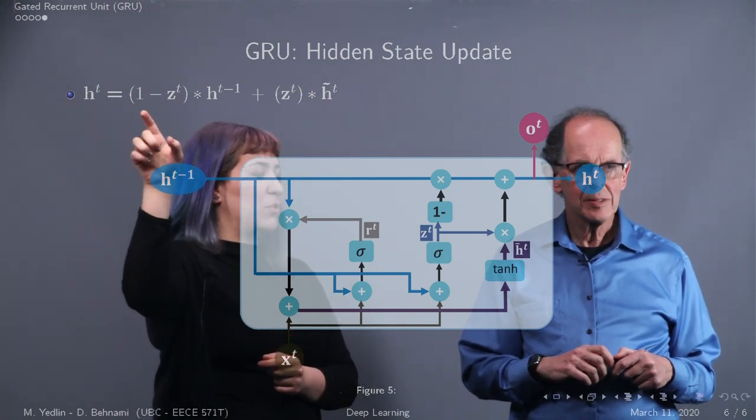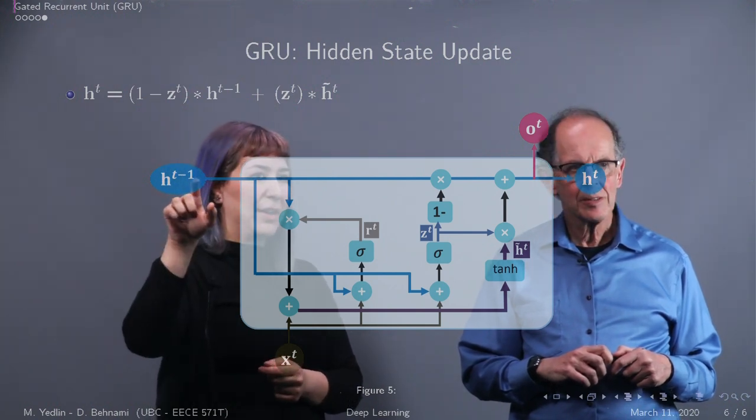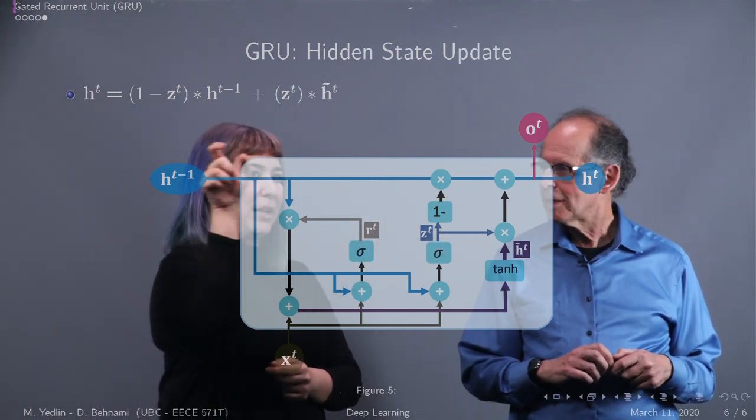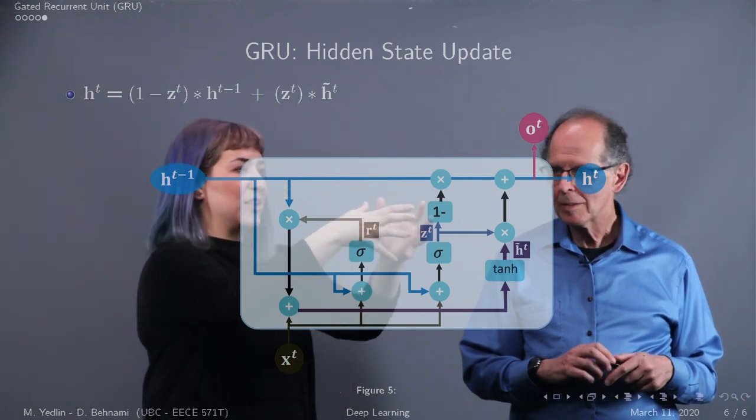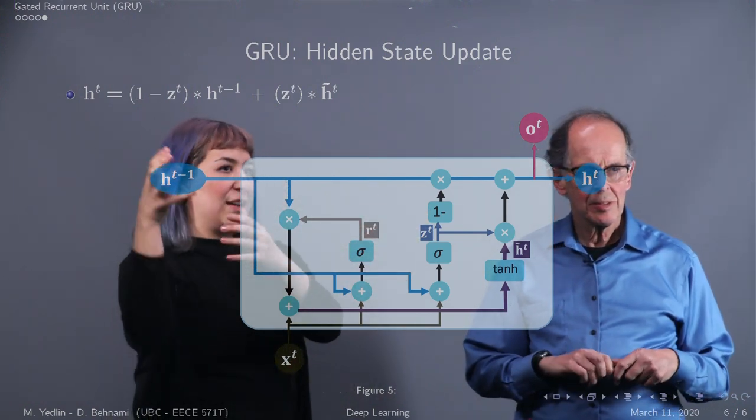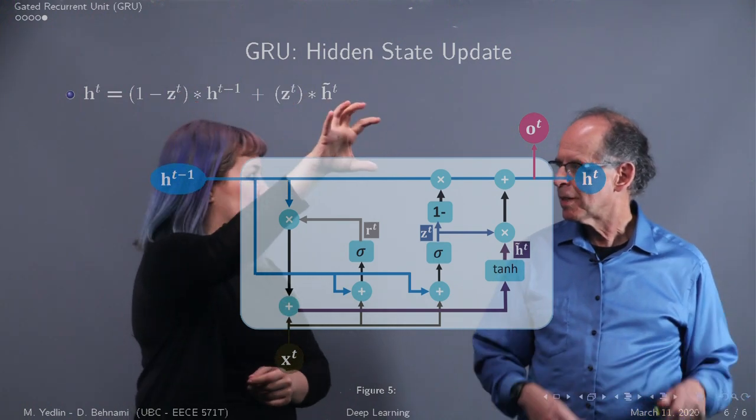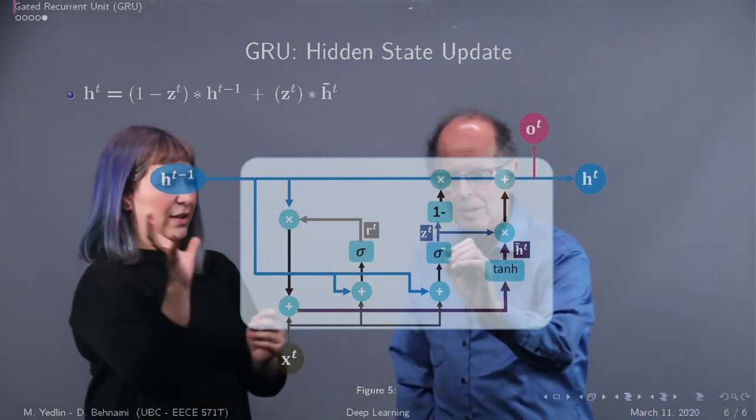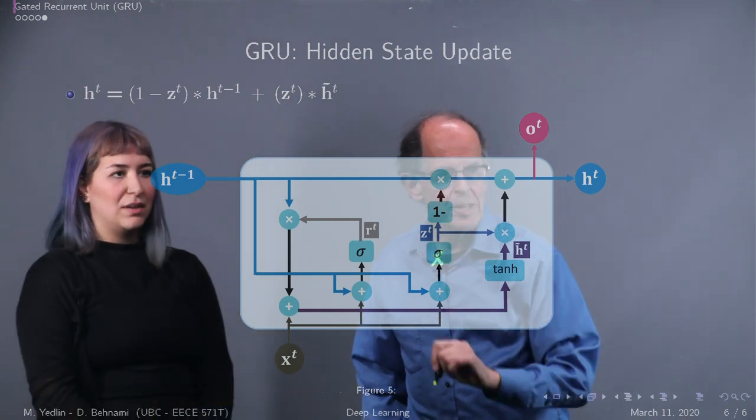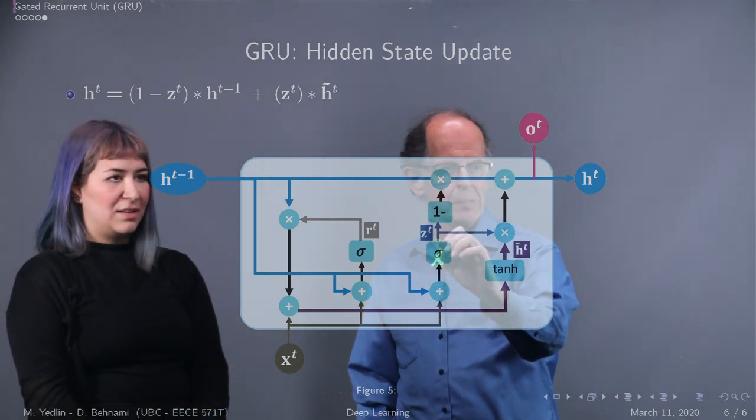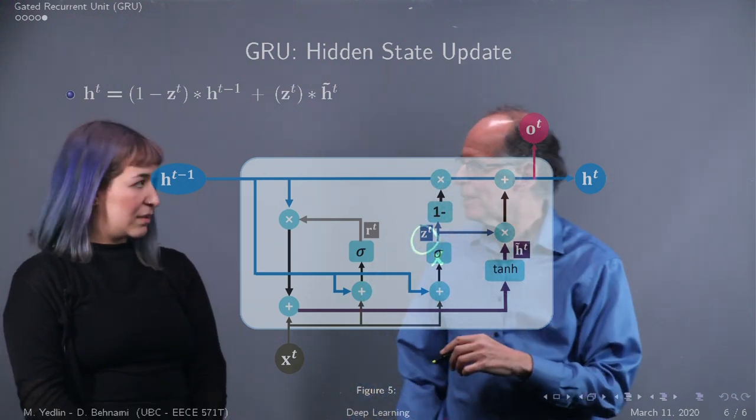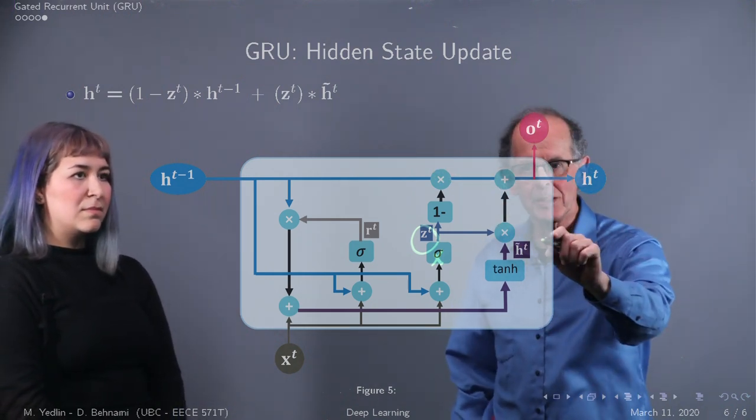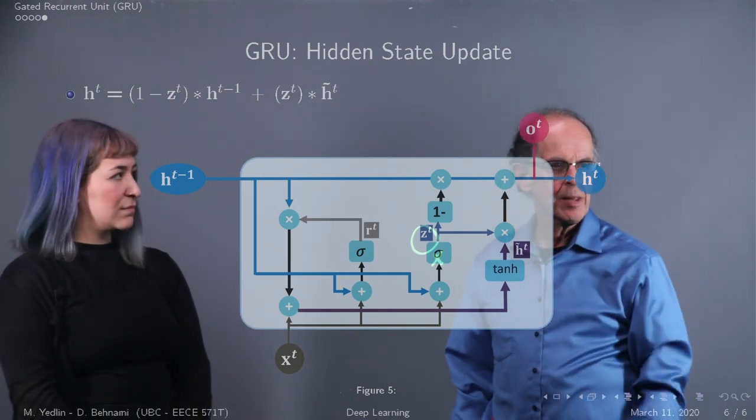And we also have this other term, which is one minus Z of T multiplied by the previous hidden state. And like schematically, that would be this guy here, one minus Z of T, this little arrow here multiplied by the hidden state that's coming in from previous stuff. And that's essentially the past component in our calculations. And you sum the past component and the present component together. And that will ultimately give you the hidden state of the output. So that point there, where we take the sigma and generate the Z is key for those two modulations, the times sign here and the times sign there.